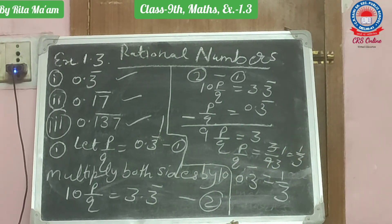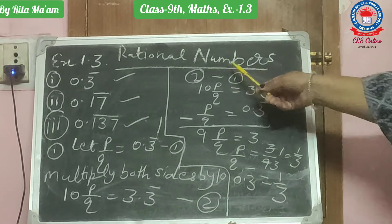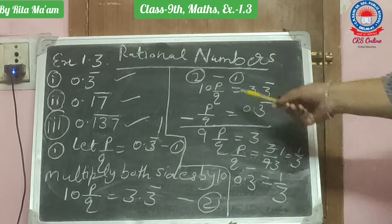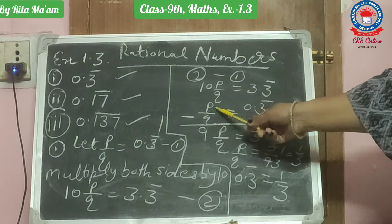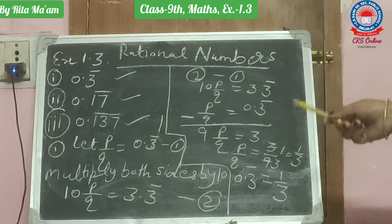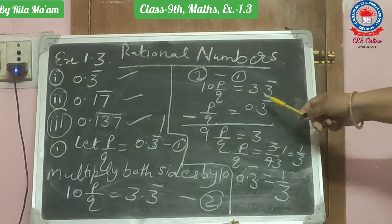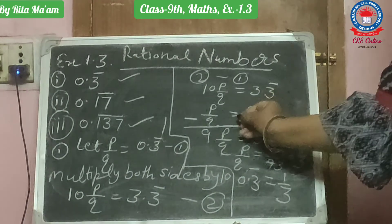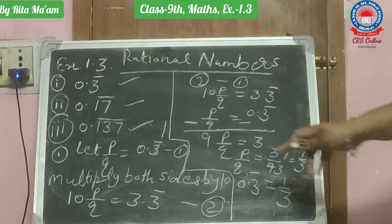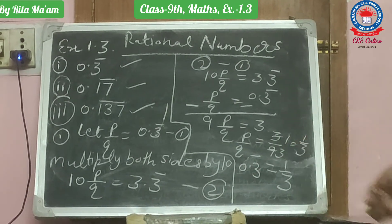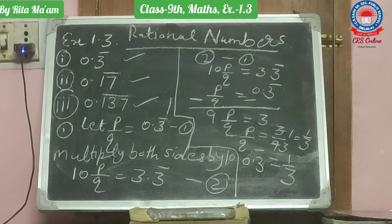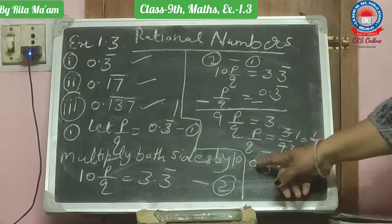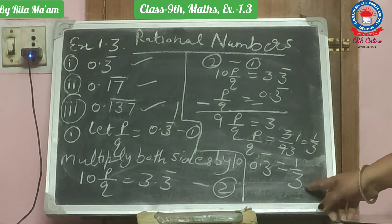You have to remember these steps. Now you will subtract equation 1 from equation 2. You will subtract 10 P upon Q minus P upon Q and get 9 P upon Q. On the right side, you will subtract 3.3 bar minus 0.3 bar and get 3. So 9 P upon Q equals 3, which means P upon Q equals 3 upon 9, which is equal to 1 by 3. So 0.3 bar can be represented as 1 by 3.